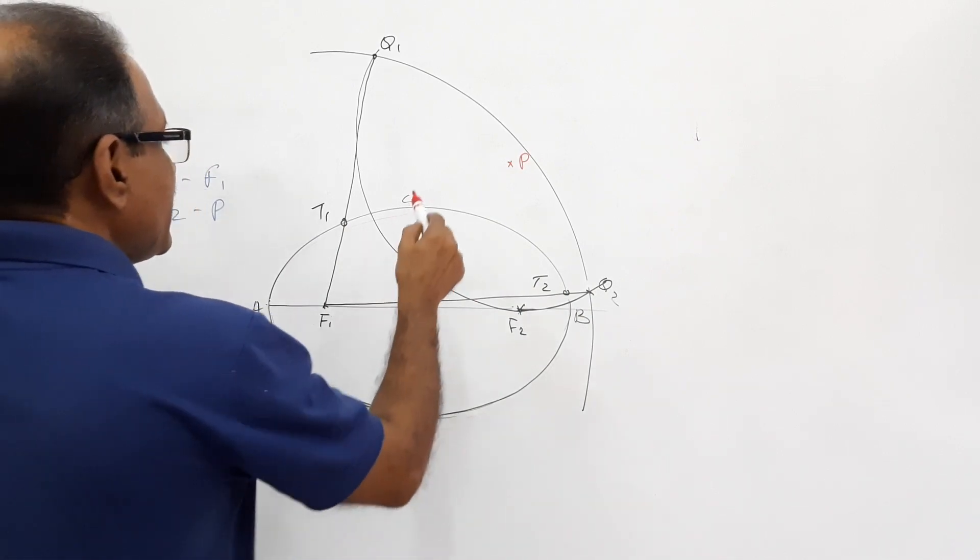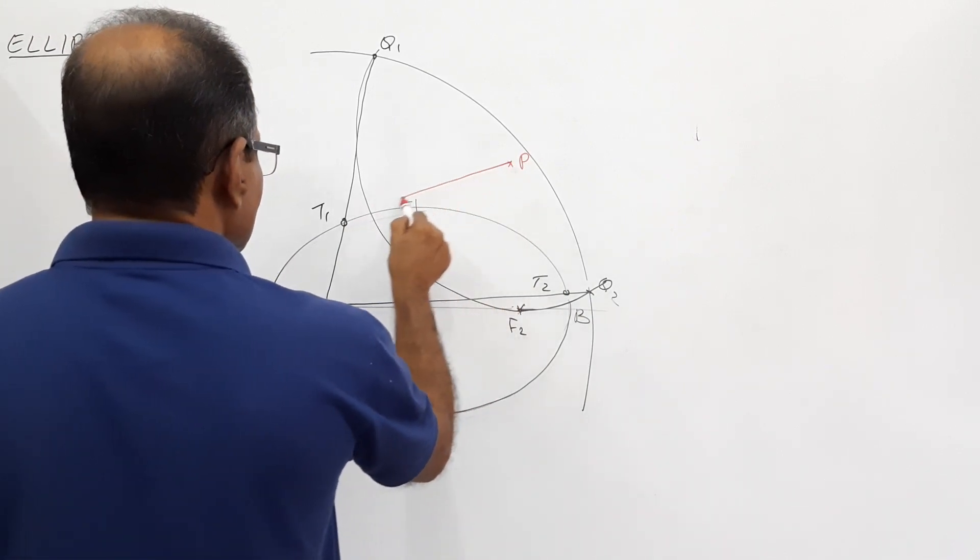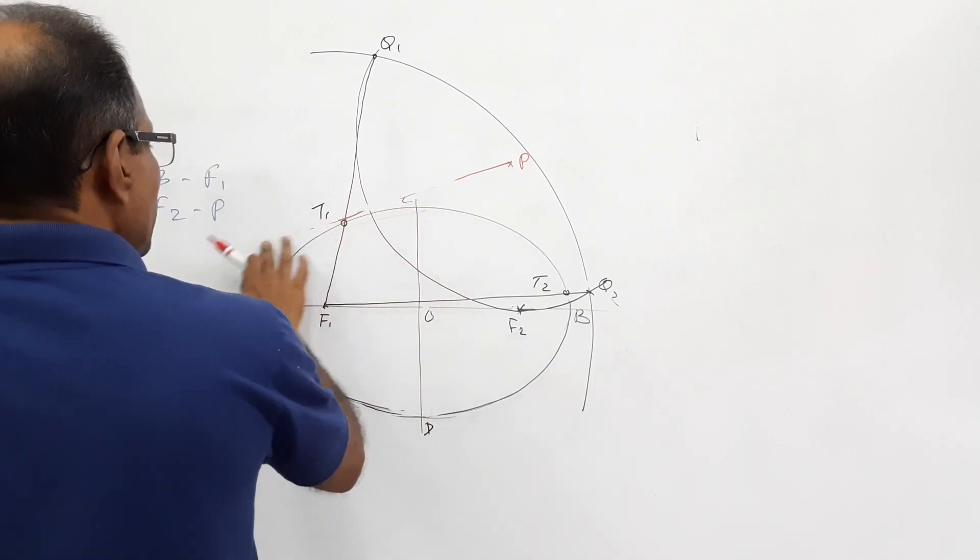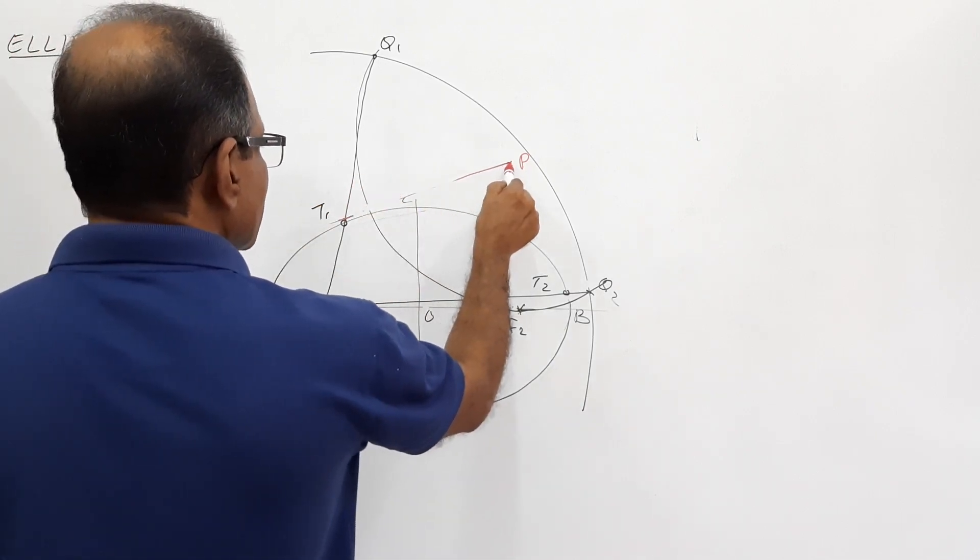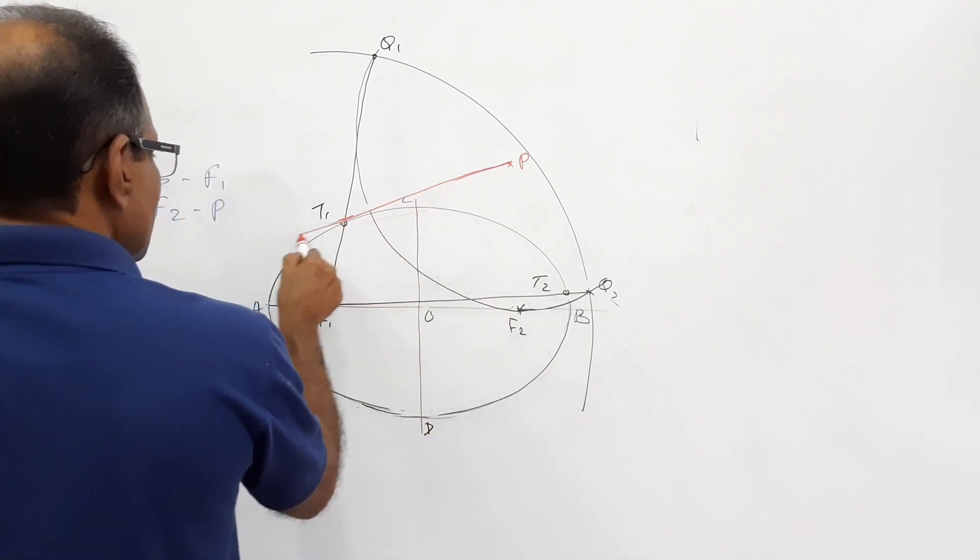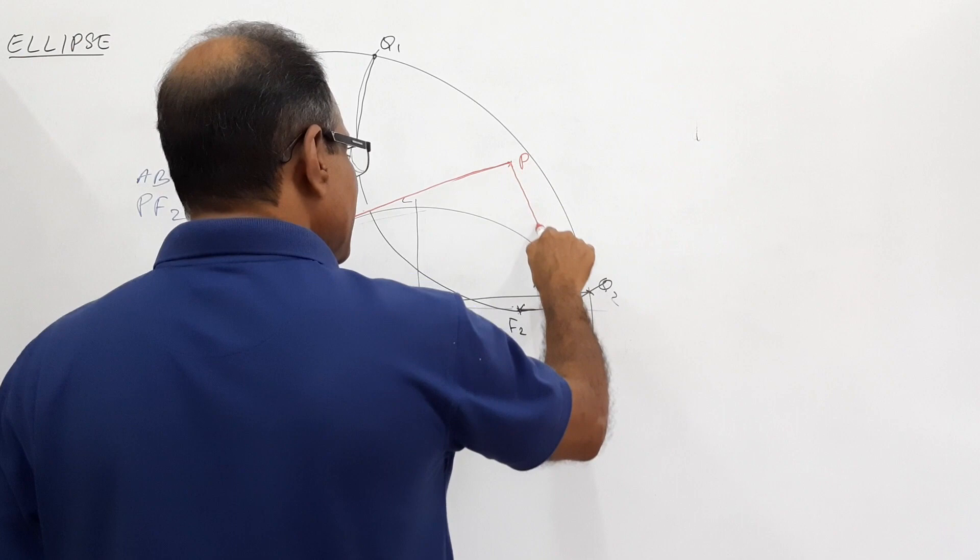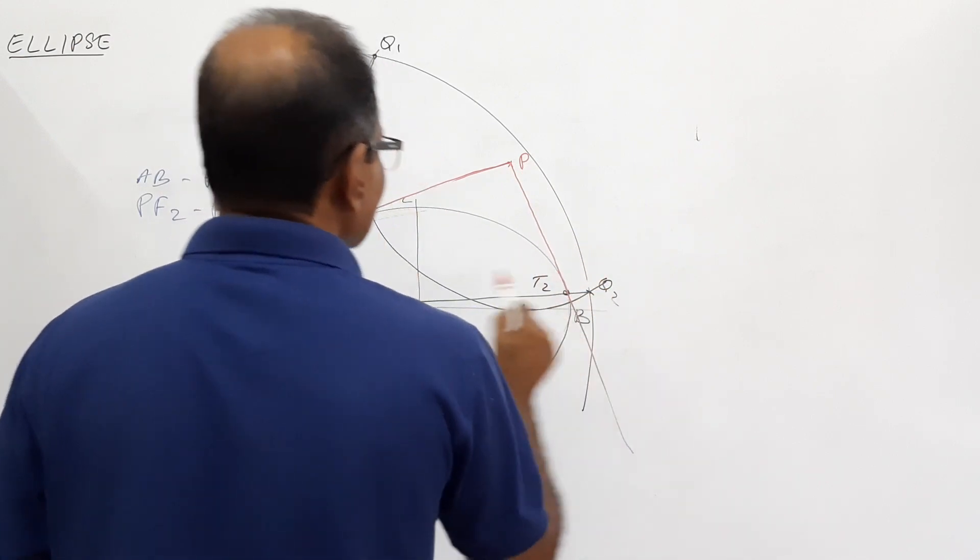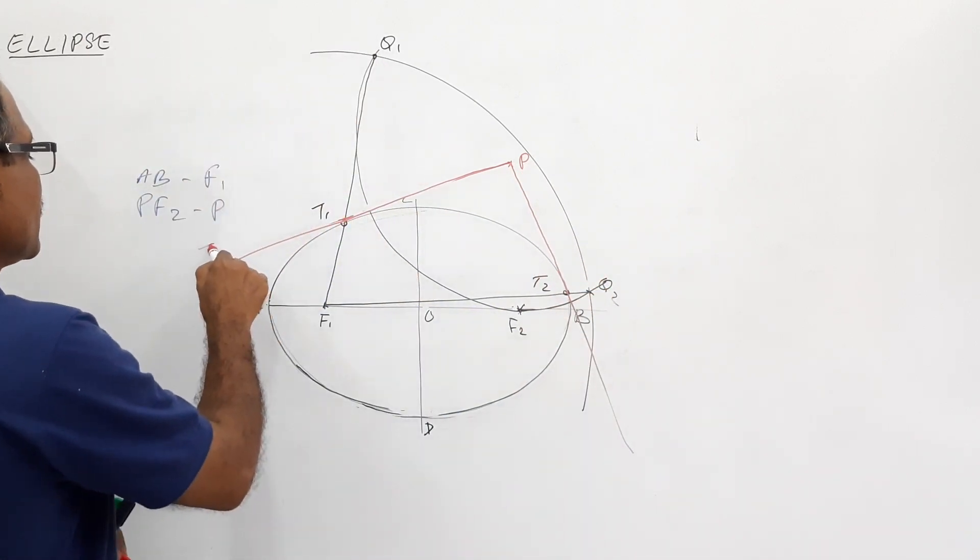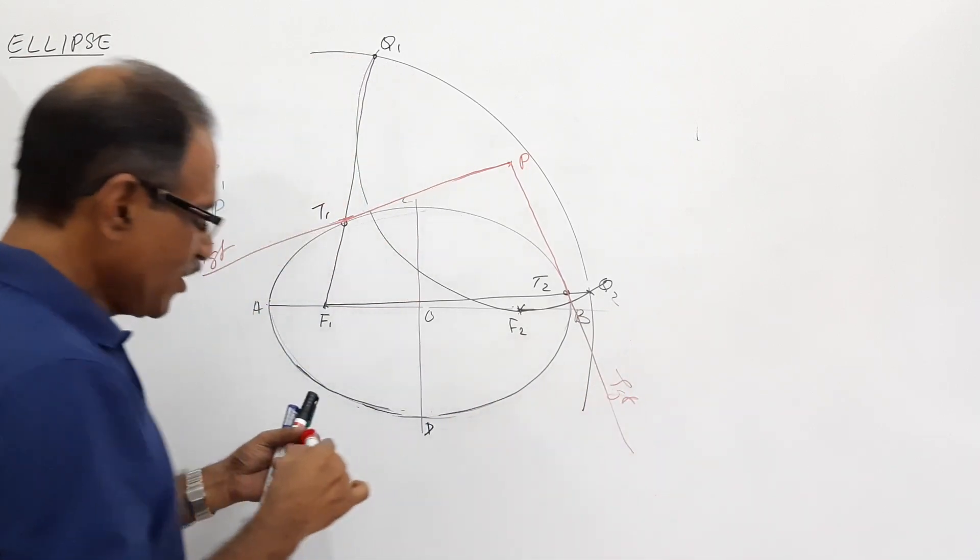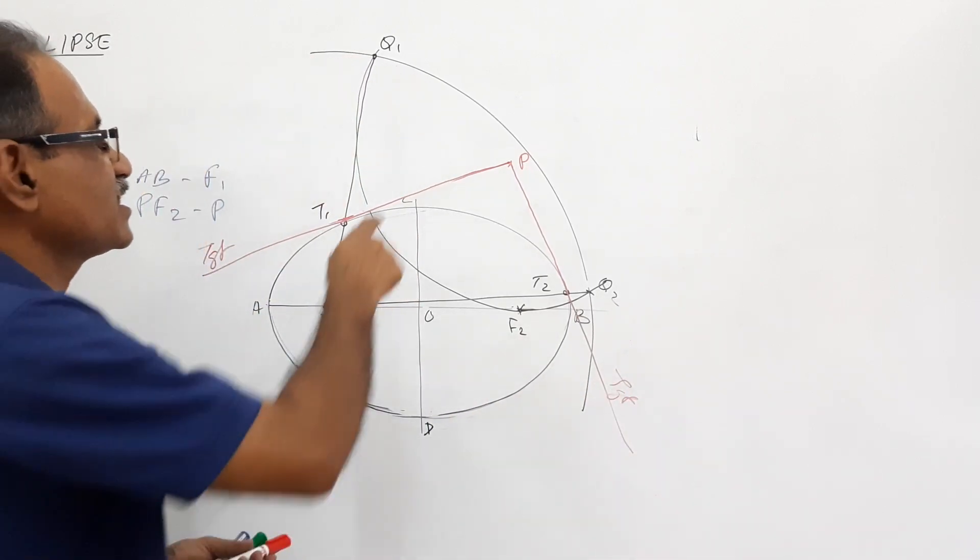Now, join PT1 and extend. That's a tangent at T1. Join PT2 and extend. That's a tangent at T2. What do you get? You get two tangents drawn from P.